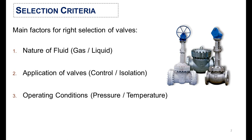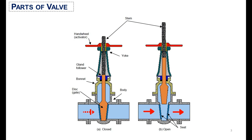Generally, a manual valve is selected on the basis of three criteria: first, nature of fluid; second, application of valves; and third, its operating conditions. A valve generally contains a hand wheel, bonnet, body, and disc. The hand wheel is used for actuation of the valve — if the stem is up it means the valve is open, and if the stem is down it means the valve is closed.